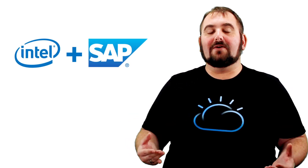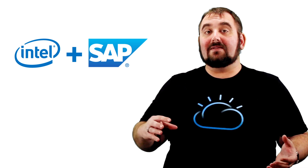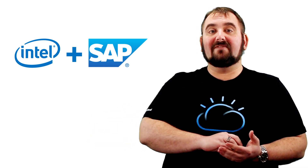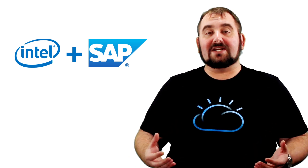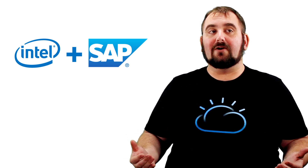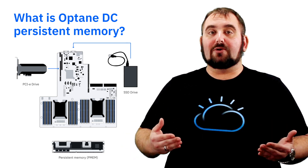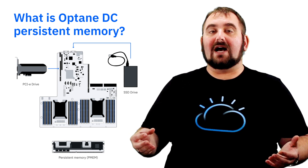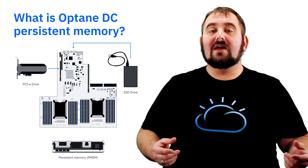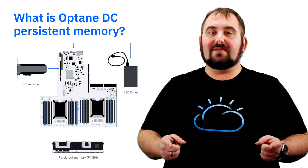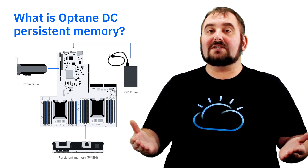Intel and SAP cooperated very closely in the development of PMEM and the development of HANA to allow you to put it on top of PMEM. The ability to do so was introduced in HANA 2.3 back a couple of years ago. Optane DC Persistent Memory is a NAND chip — a persistent chip, similar to what you would find on an Optane SSD or an Optane PCIe drive, but it's in a DIMM form factor. It's on the actual piece of silicon that goes into a DIMM slot, just like RAM does.